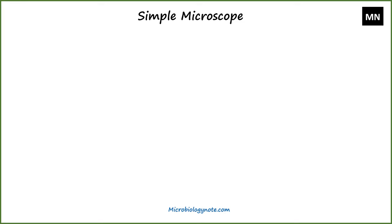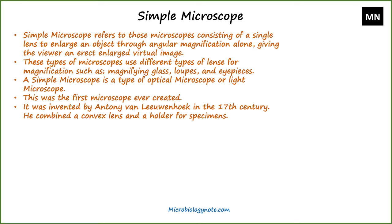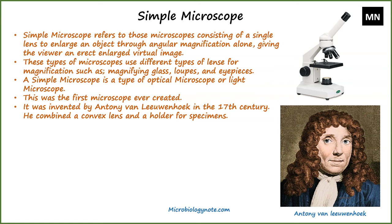Now we will talk about the simple microscope. This was the first microscope ever created. It was invented by Antony van Leeuwenhoek in the 17th century. He combined a convex lens and a holder for specimens. A simple microscope refers to those microscopes consisting of a single lens to enlarge an object through angular magnification alone, giving the viewer an erect, enlarged virtual image. A simple microscope is a type of optical or light microscope.